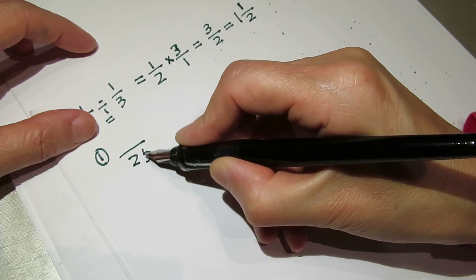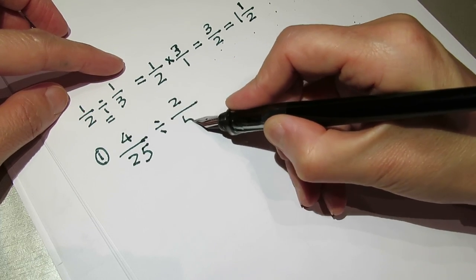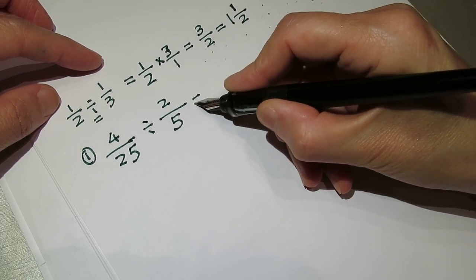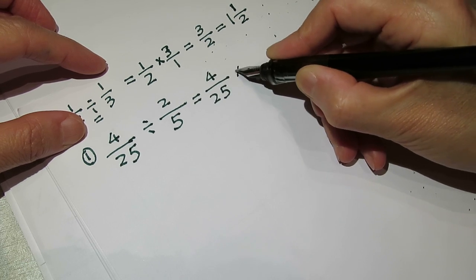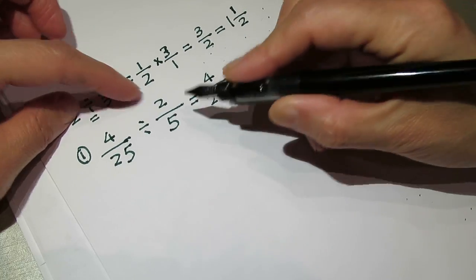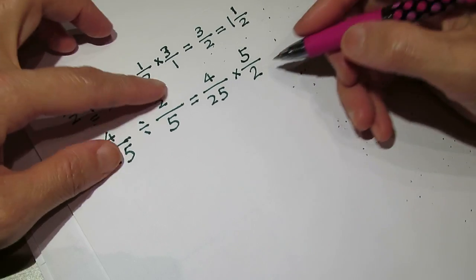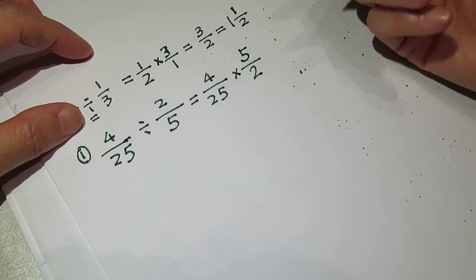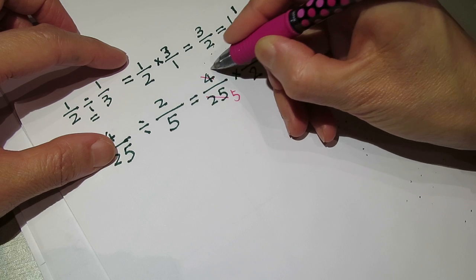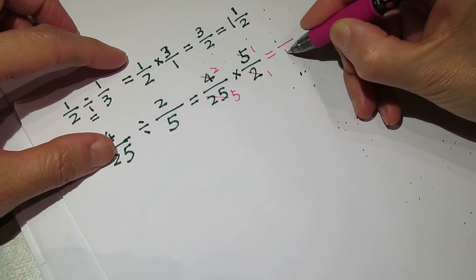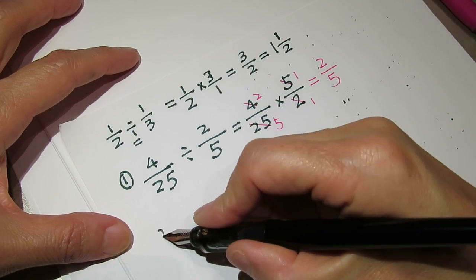Practice: 4 over 25 divided by 2 over 5. Copy the first number — 4 over 25 — times, then flip it: 2 goes to the bottom, 5 to the top. Now do the multiplication, cross-cancel, and the answer is 2 over 5.